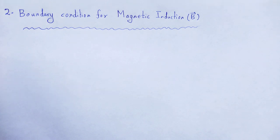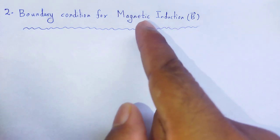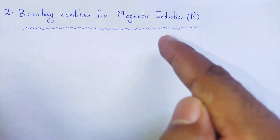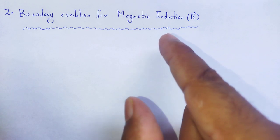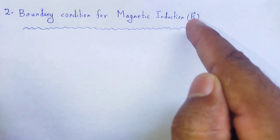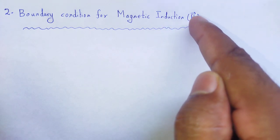To calculate the boundary condition for magnetic field induction B vector, we have to identify which of Maxwell's equations is related to magnetic induction. That is the second Maxwell's equation: divergence of magnetic field induction is equal to 0.